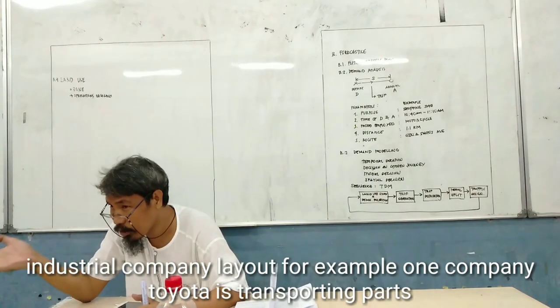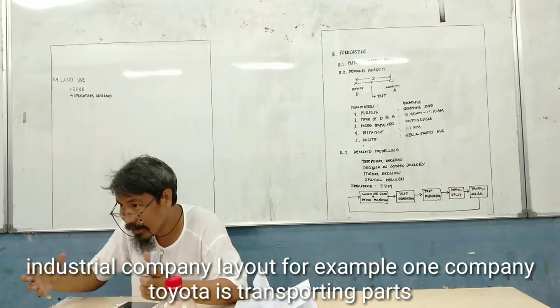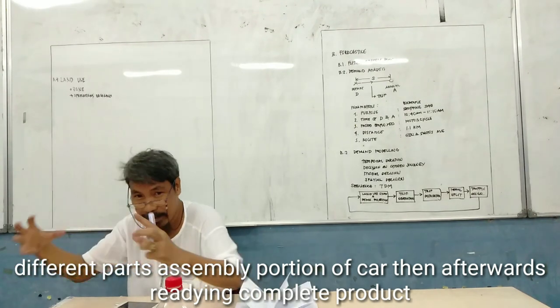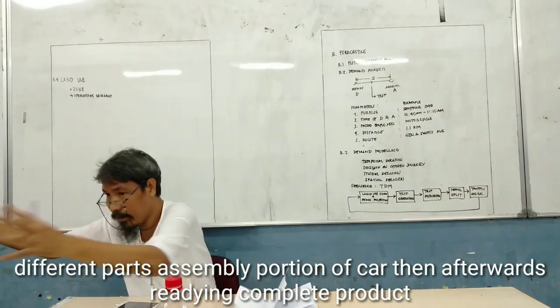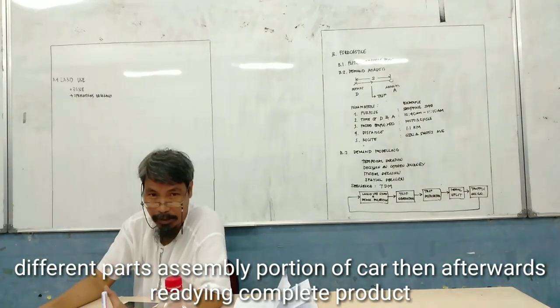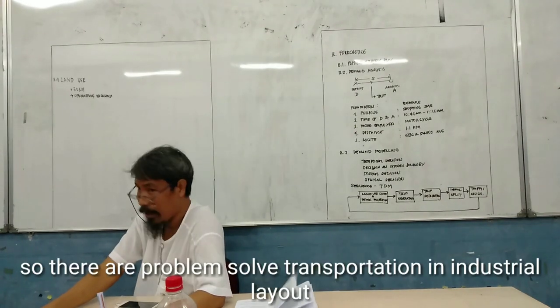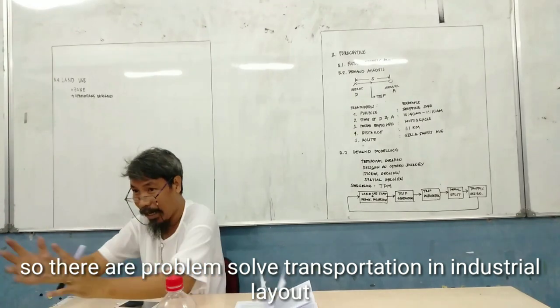Industrial company layout, some automobile company, Toyota, is transporting parts, different parts for assembly of portions of cars. After when we complete the truck, okay.